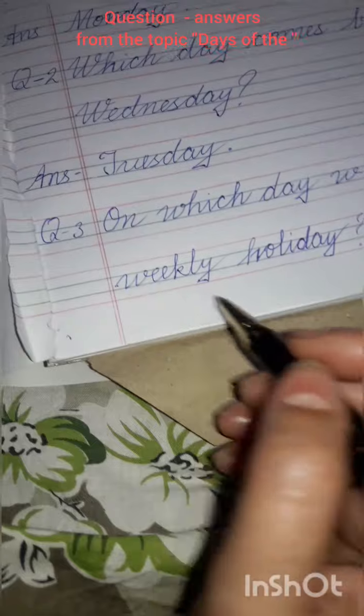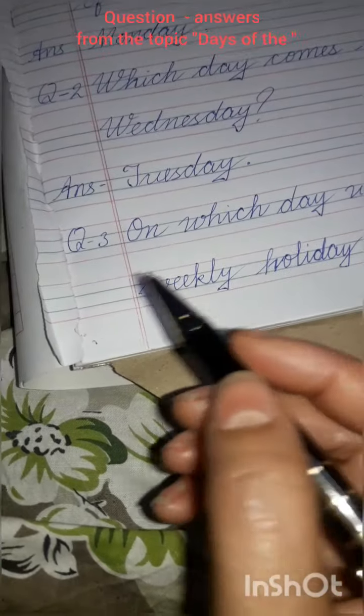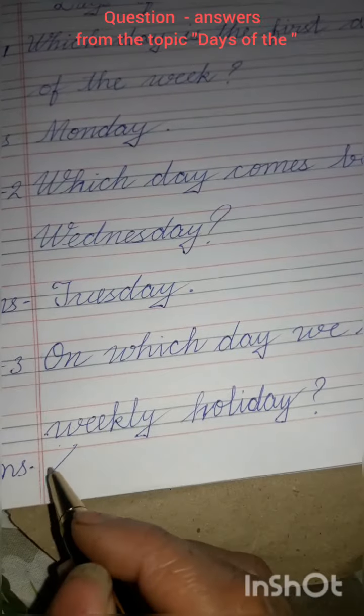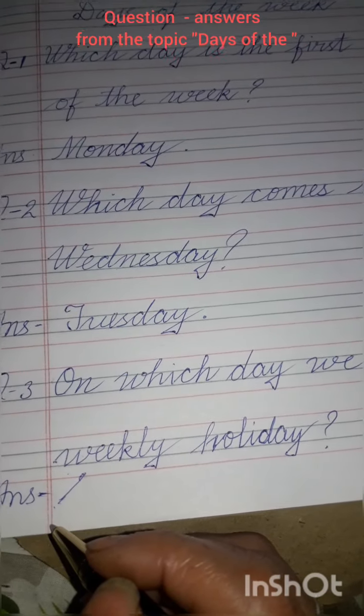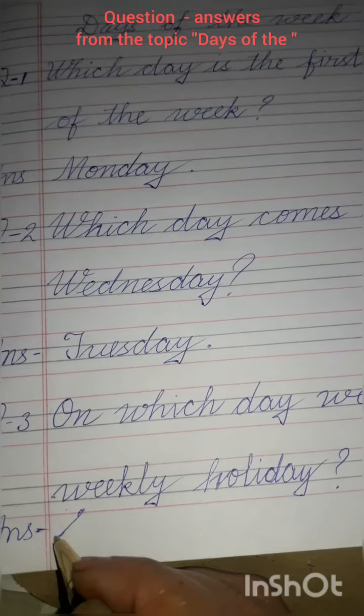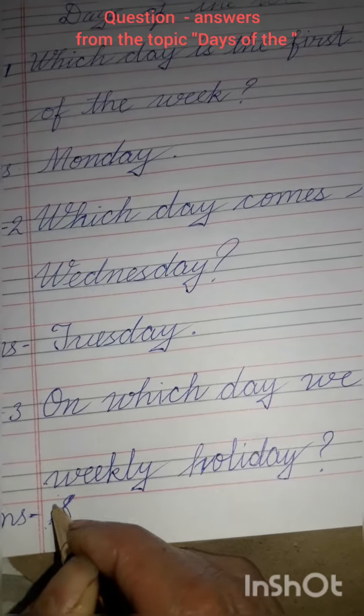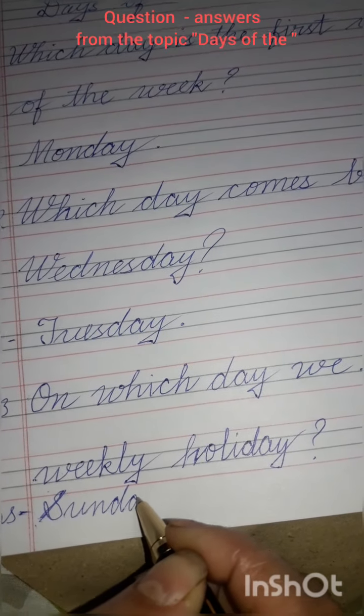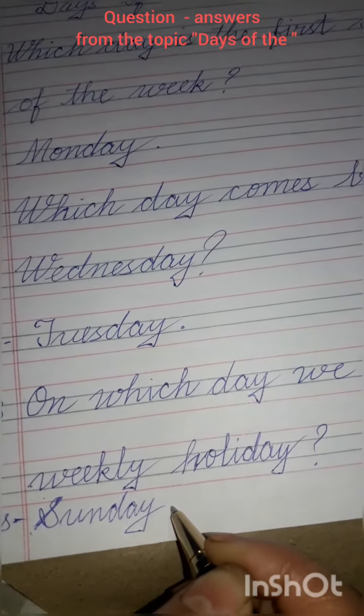Then write, because we have very less space and we have to write one word answer. So we will write at the bottom here A-N-S answer. And children you all know that we have weekly holiday on Sunday. So write the spelling of Sunday here. S-U-N-D-A-Y Sunday.